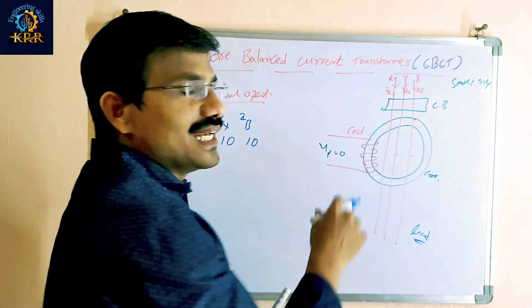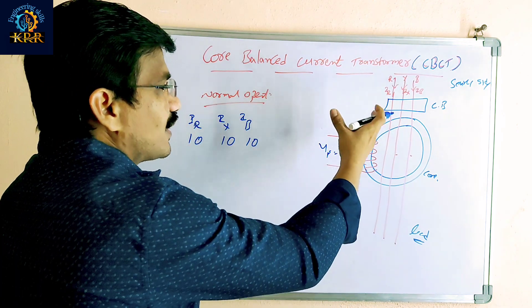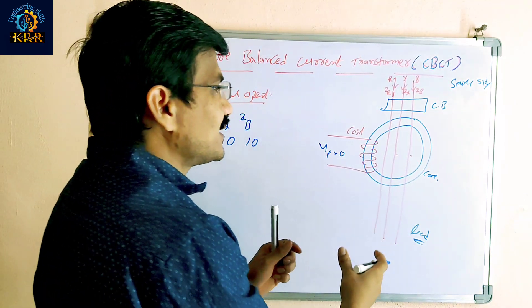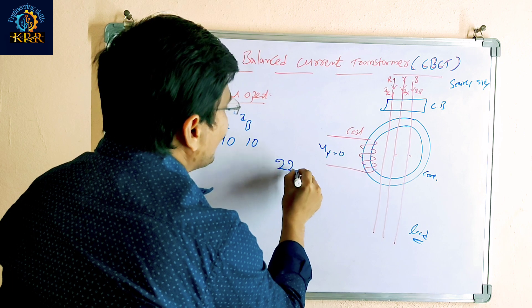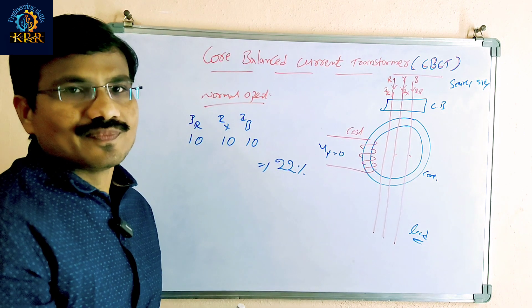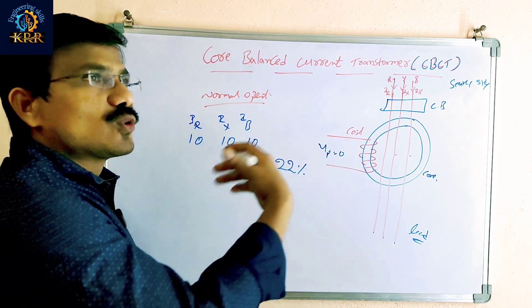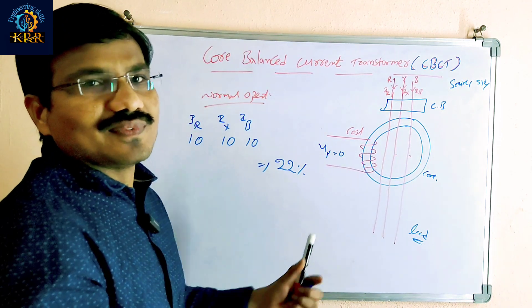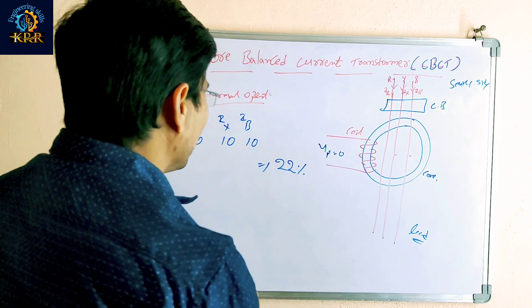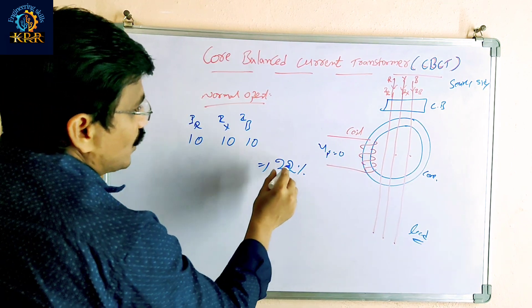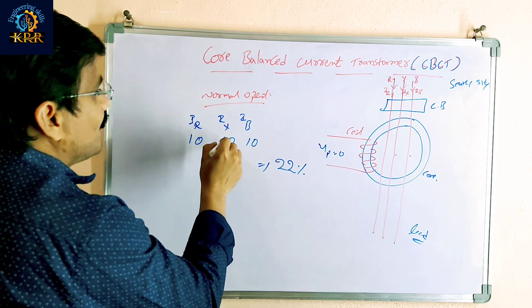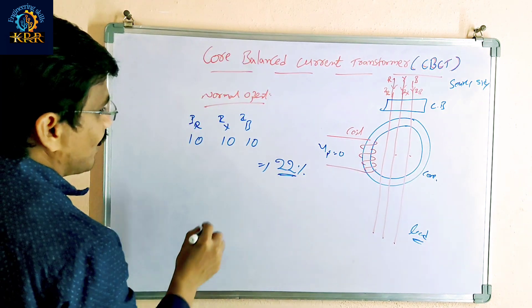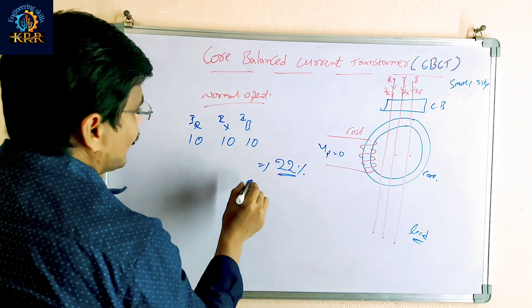The CBCT is mainly used for protection when unbalanced current is passing through the feeders. Up to 22% of total load unbalanced current is allowed. For example, if R phase carries 10A, Y phase 10A, and B phase 10A, then 22% unbalance means 2.2A extra.